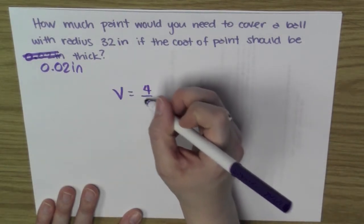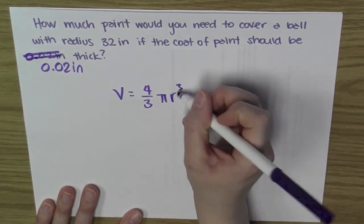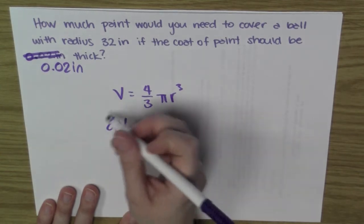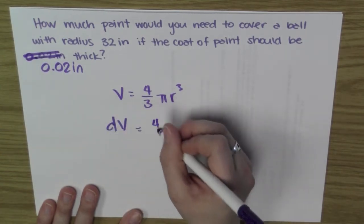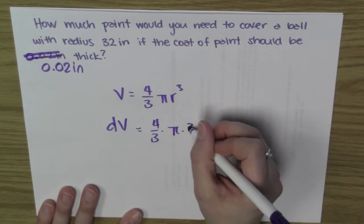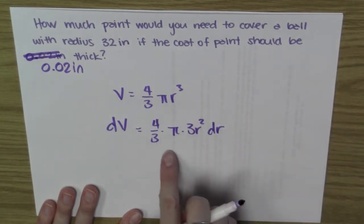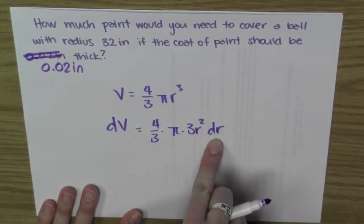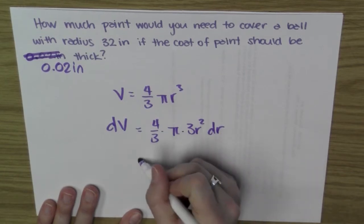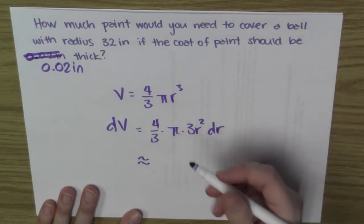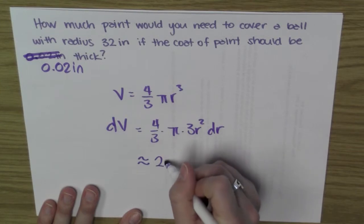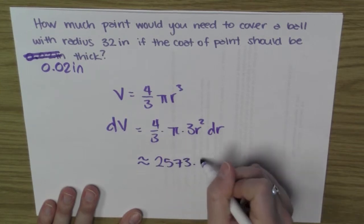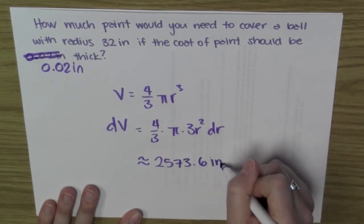If I know that volume is 4/3 pi r cubed, then the change in volume will be 4/3 times pi times 3r squared dr. So it depends on what the radius is and how much I've changed the radius by. So since this is the same problem as the last time, we get the same answer, 2,573.6 cubic inches of paint.